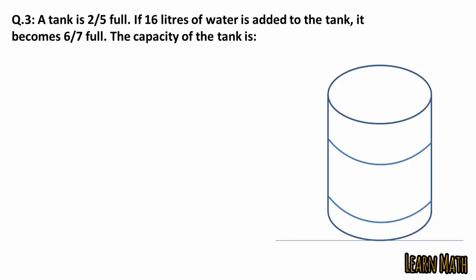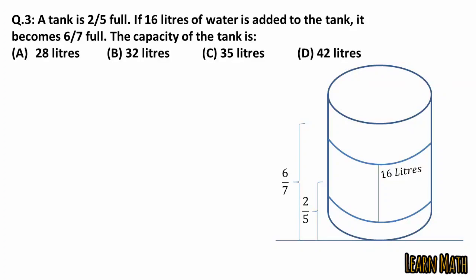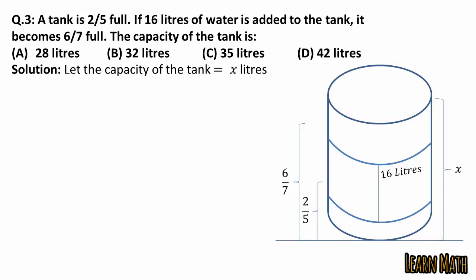The third question is: a tank is 2/5 full. If 16 liters of water is added to the tank, it becomes 6/7 full. What is the capacity of the tank? Let the capacity of the tank equal x liters. According to the question we can write: 6/7 of x minus 2/5 of x equals 16 liters.